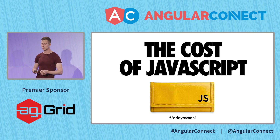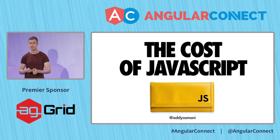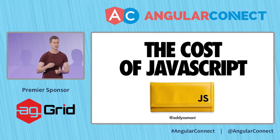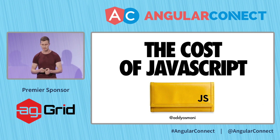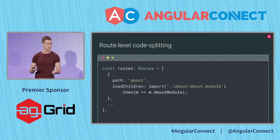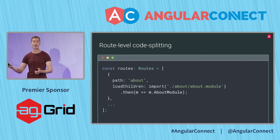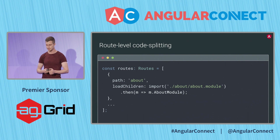Addy Osmani is publishing a regular survey on the cost of JavaScript. He did it for 2019 as well, and still the most expensive asset that we're shipping over the wire is JavaScript. We'd definitely want to reduce the number of bytes shipped during the initial application load time in order to speed up time to interactive. Probably the most efficient way to do that is by using route-level code splitting. Most of you are familiar with this concept — you can use loadChildren in the Angular route declaration, and from there, lazily load a particular route that is not going to be used immediately.